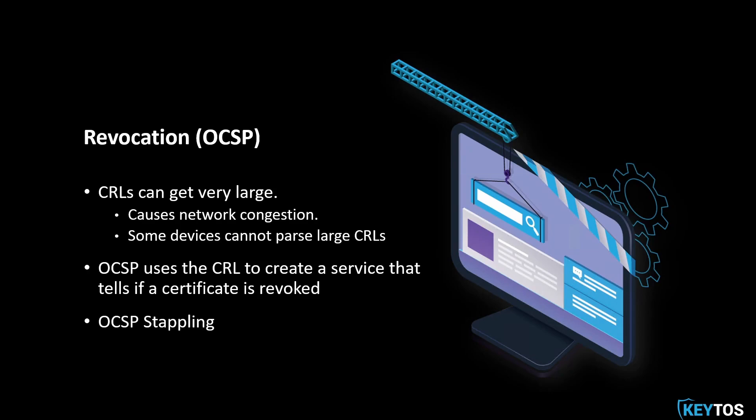So instead of having all your applications on the network download the CRL, which can become large and affect your network performance or not be readable by smaller computers, OCSP takes care of all that. The clients just go to the OCSP server and say, is this certificate valid? The OCSP server looks at the CRL, makes sure the certificate is not on it, and responds either yes or no.